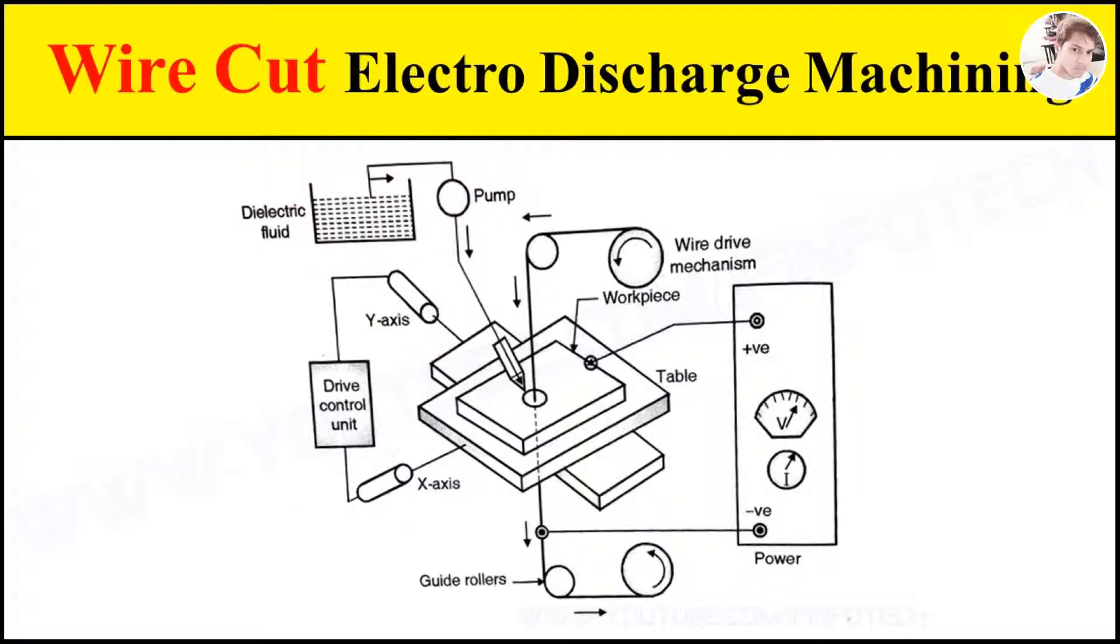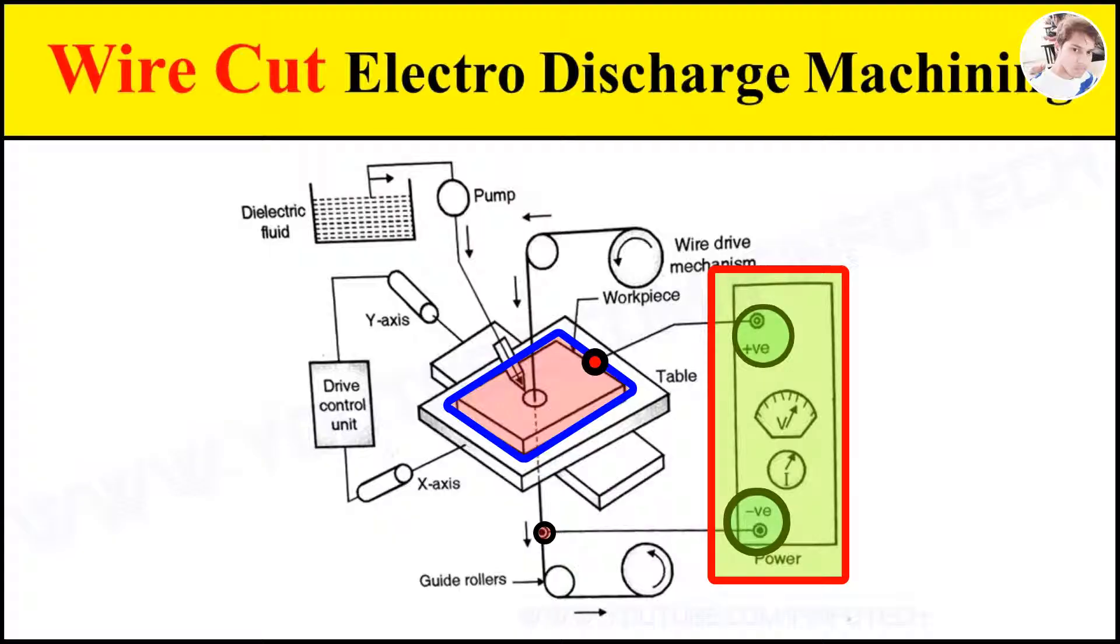The DC power supply similar to electro discharge machining process is provided. The workpiece is connected to positive terminal and wire electrode connected to negative terminal. It is provided with electronic pulse generator to apply the correct voltage between wire electrode and workpiece.